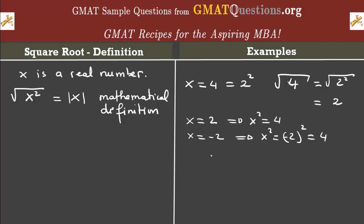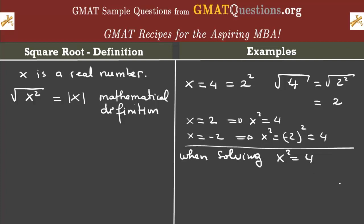Be careful here, because if you're given a question where you have to solve x squared equals 4, then x is equal to 2 or x is equal to negative 2. This is an entirely different question — it is not the same as asking what is the square root of 4. If you are asked the square root of 4, it's a unique value: the positive root, which is 2. But if you're asked to solve x squared equal to 4, you have two opposite values: x equals 2 or x equals negative 2.